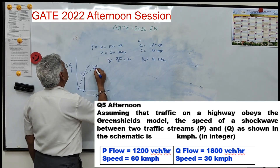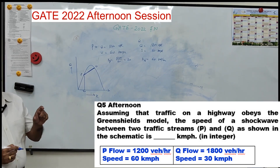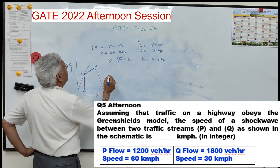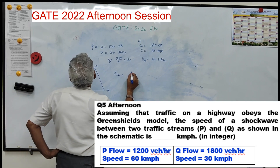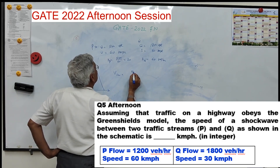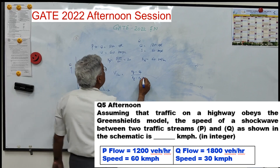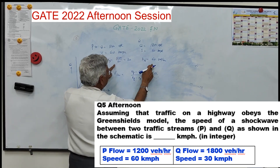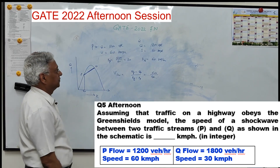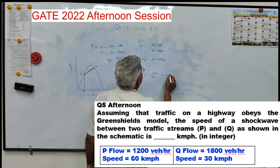The speed of the shock wave is the slope of the line joining the two points: shock wave speed = (qQ - qP) / (kQ - kP) = (1800 - 1200) / (60 - 20) = 600/40 = 15 km/h.